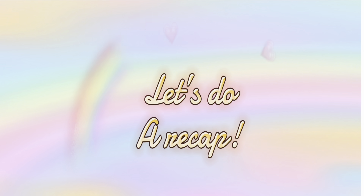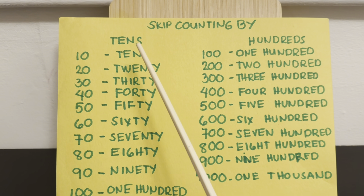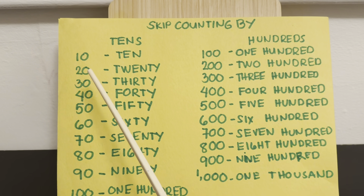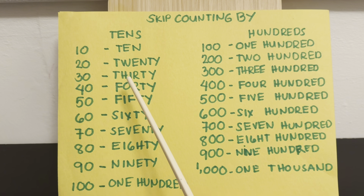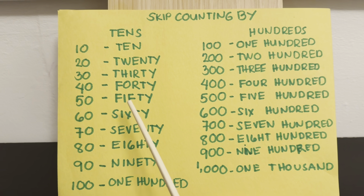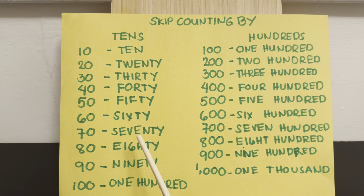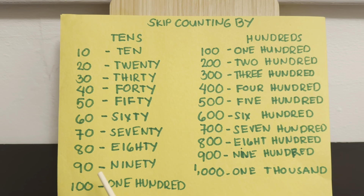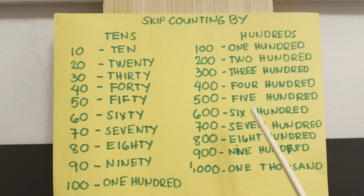Now, let's do a recap. Let's keep counting by tens. 10, 20, 30, 40, 50, 60, 70, 80, 90, 100.